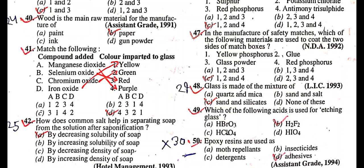Match the following compounds added to impart color to glass: Manganese dioxide gives purple color, selenium oxide gives red color, chromium oxide gives green color, and iron oxide gives yellow color.